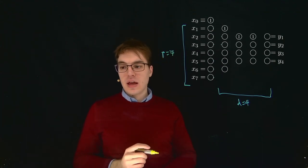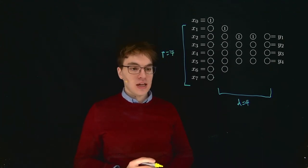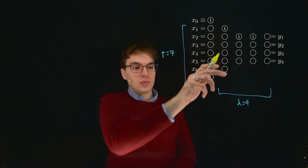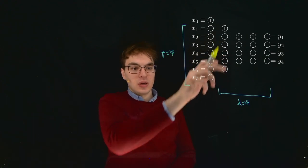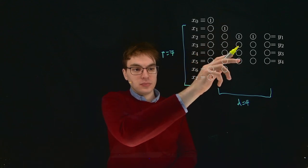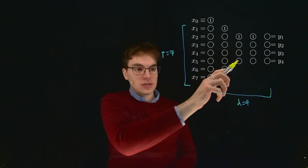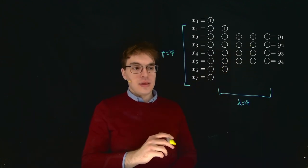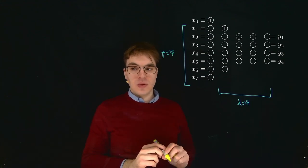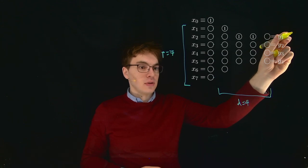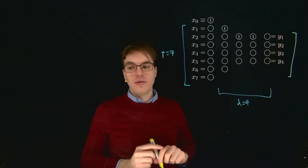We also have the layer specifications. Layer 1 (L1) has 5 units — 1, 2, 3, 4, 5. This bias unit does not count. Layer 2 has 3 units, and layer 3 also has 3 units. Then we see the output layer with K units, and here K equals 4.